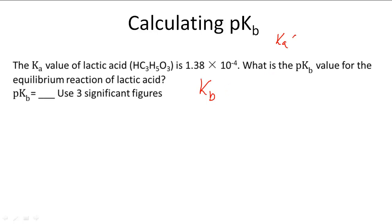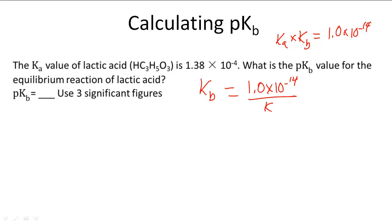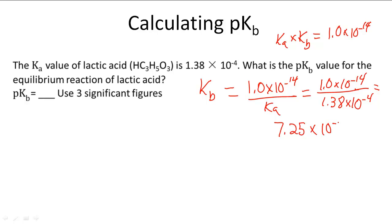Ka times Kb equals 1.0 times 10 to the negative fourteenth. We can rearrange to get Kb equals 1.0 times 10 to the negative fourteenth divided by Ka. So 1.0 times 10 to the negative fourteenth divided by 1.38 times 10 to the negative fourth gives us a Kb of 7.25 times 10 to the negative eleventh.